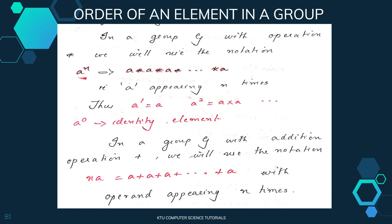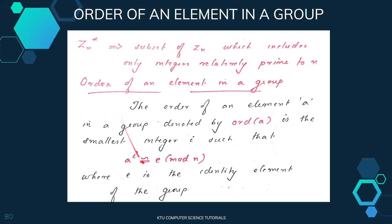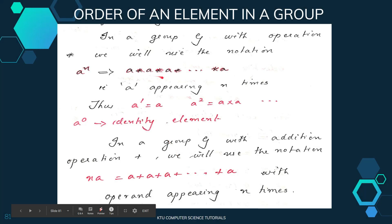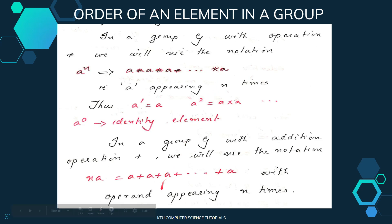Here, a raised to n means a multiplied by itself n times — this is called repeated multiplication. For an addition operation, it means n times addition of the element. So the operation of a^n is either repeated multiplication or repeated addition, depending on the group operation.